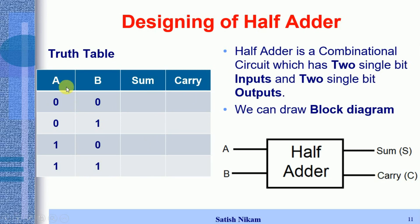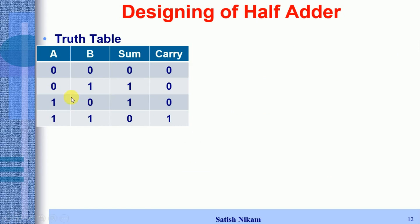Using arithmetic laws we can find the sum and carry for every possible combination of A and B. When A is 0 and B is 0, Sum is 0 and Carry is 0. When A is 0 and B is 1, Sum is 1 and Carry is 0. When A is 1 and B is 0, Sum is 1 and Carry is 0. When A is 1 and B is 1, Sum is 0 and Carry is 1. So we have the complete truth table for the half adder circuit.